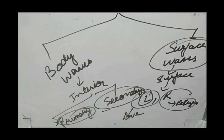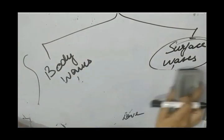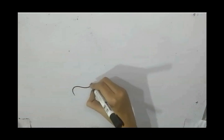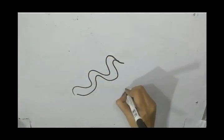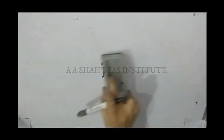We study body waves to learn about the interior of the earth, and surface waves to study the damage that can be caused by an earthquake. One surface wave moves material to and fro, while the other moves material up and down. Primary waves travel like sound waves — through compression and refraction — meaning they can travel in solid, liquid, and gases. Wherever there are particles that can be vibrated, P waves will travel there.